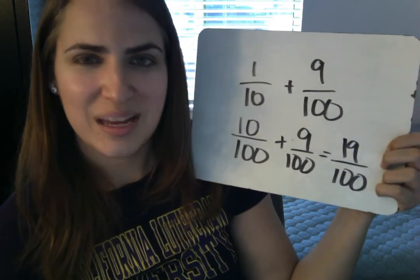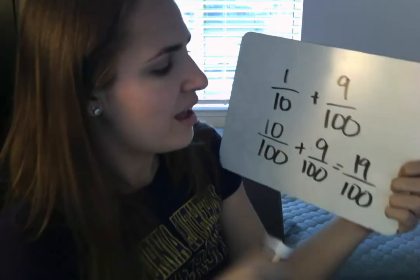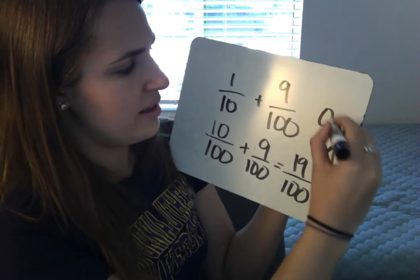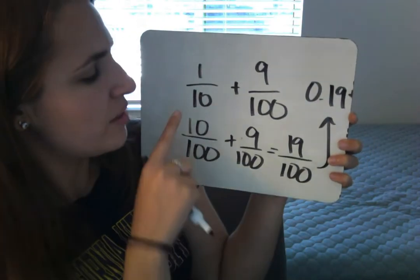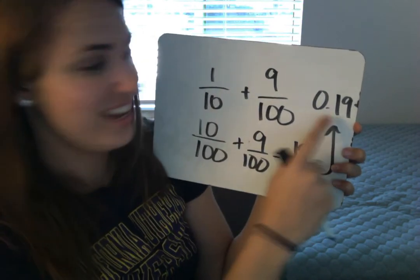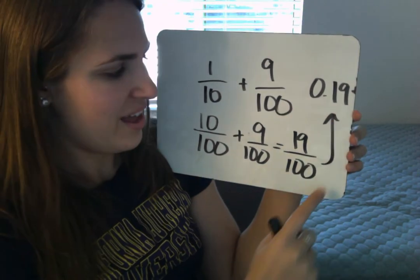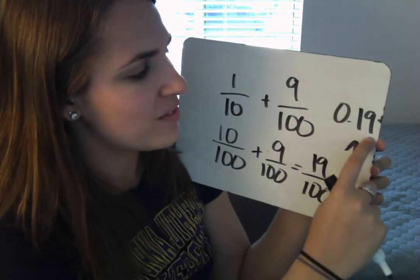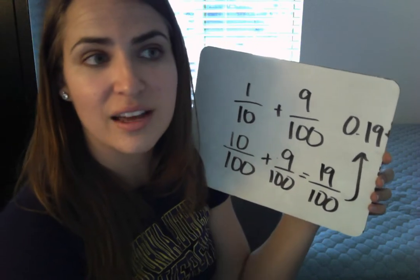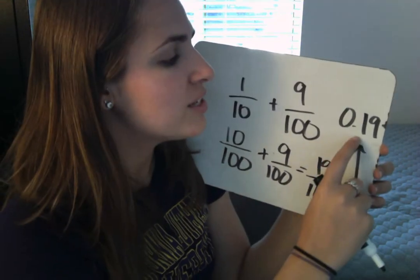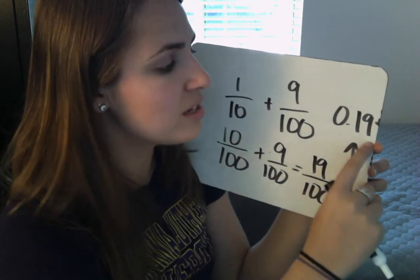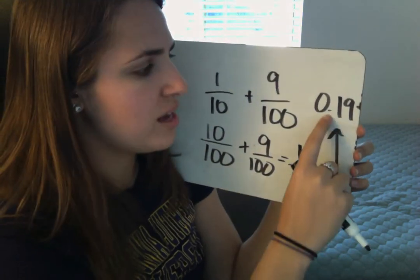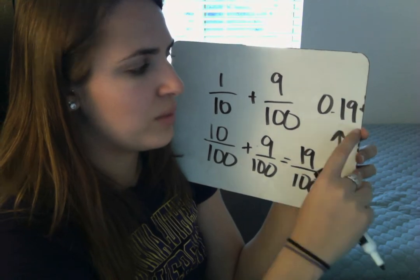Beautiful, you guys. And then writing this in decimal form, we would write it like this, because we know that we have one tenth and nine hundredths. And we know that when we read this decimal, we look at the very last place value. The last place value is hundredths, so we know that it's nineteen hundredths. We just read the number like we would normally — if there wasn't a decimal, we would read that as nineteen. But we know there's a decimal, and this place value is hundredths, so we read it as nineteen hundredths.